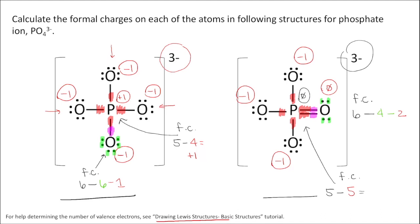Remember that we can do this because phosphorus can violate the octet rule by having more than eight electrons. With respect to formal charge considerations, the structure on the right is the better one.